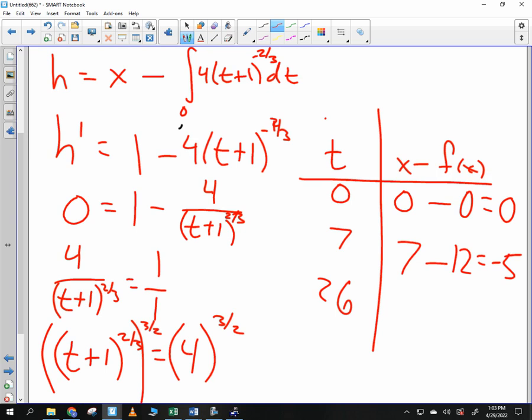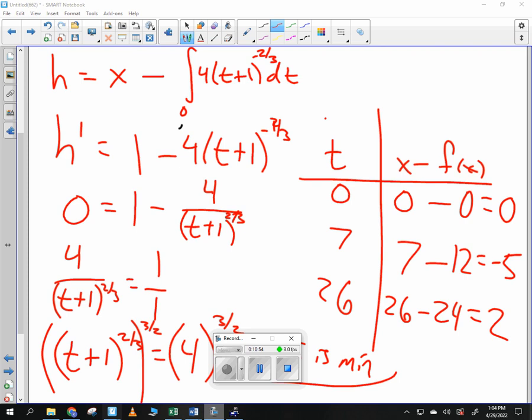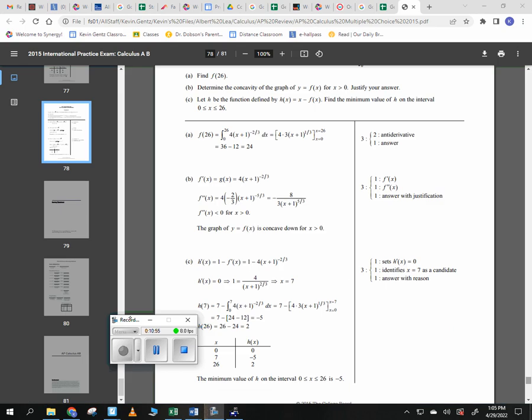And then we already calculated at 26, didn't we? So you have x is 26 minus, and then what did you get when you plugged in 26? 24. And you can see you get 2. So negative 5 is the minimum.